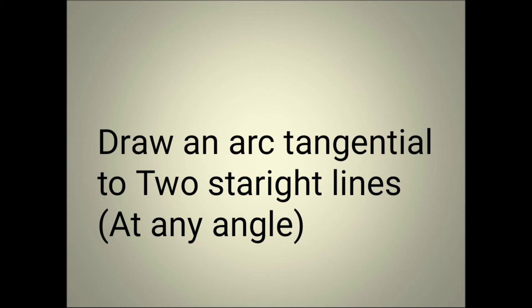Good morning students. Today's class is: draw an arc tangential to two straight lines at any given angle. In between the two straight lines we need to draw a tangential arc — that is our concept. If the two straight lines are at any angle, equal to 90 degrees, above 90 degrees, or less than 90 degrees, we need to draw a tangential arc that means the arc should be touching the two straight lines.